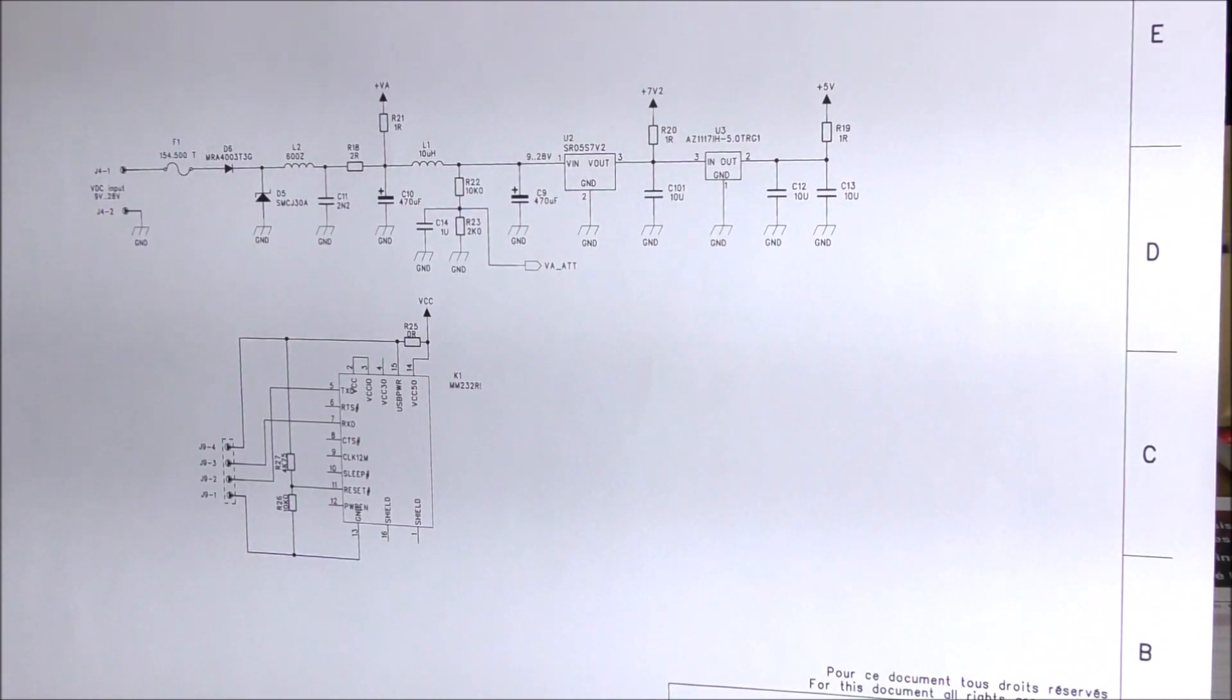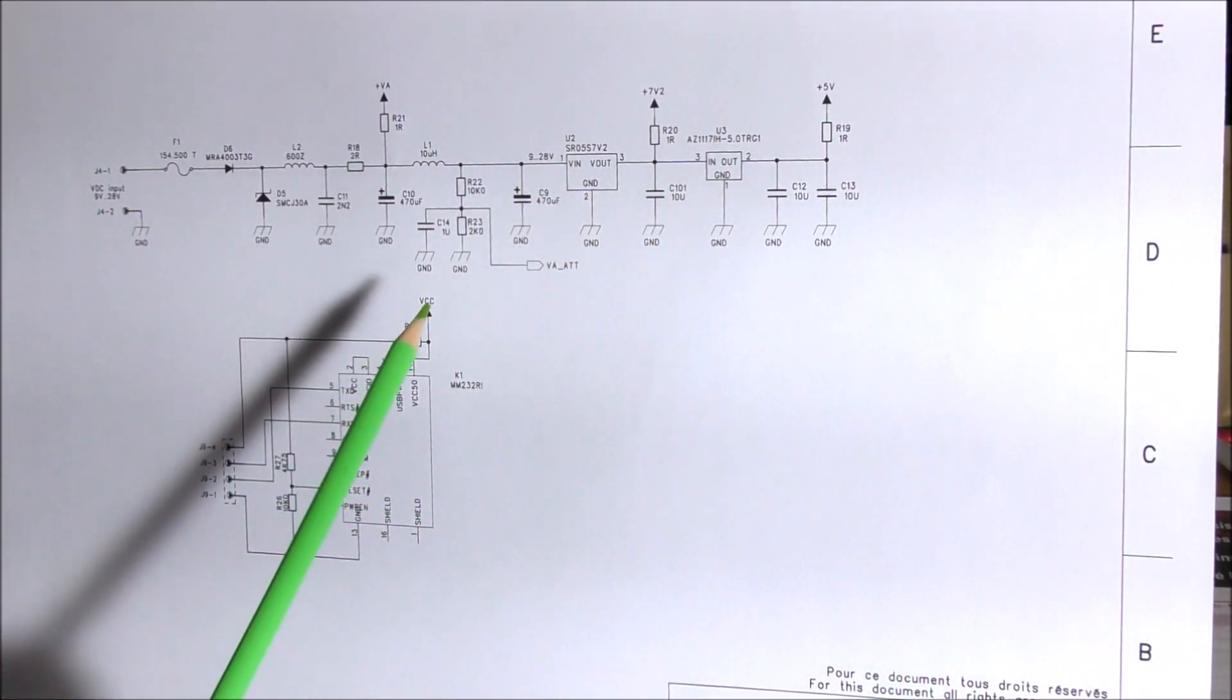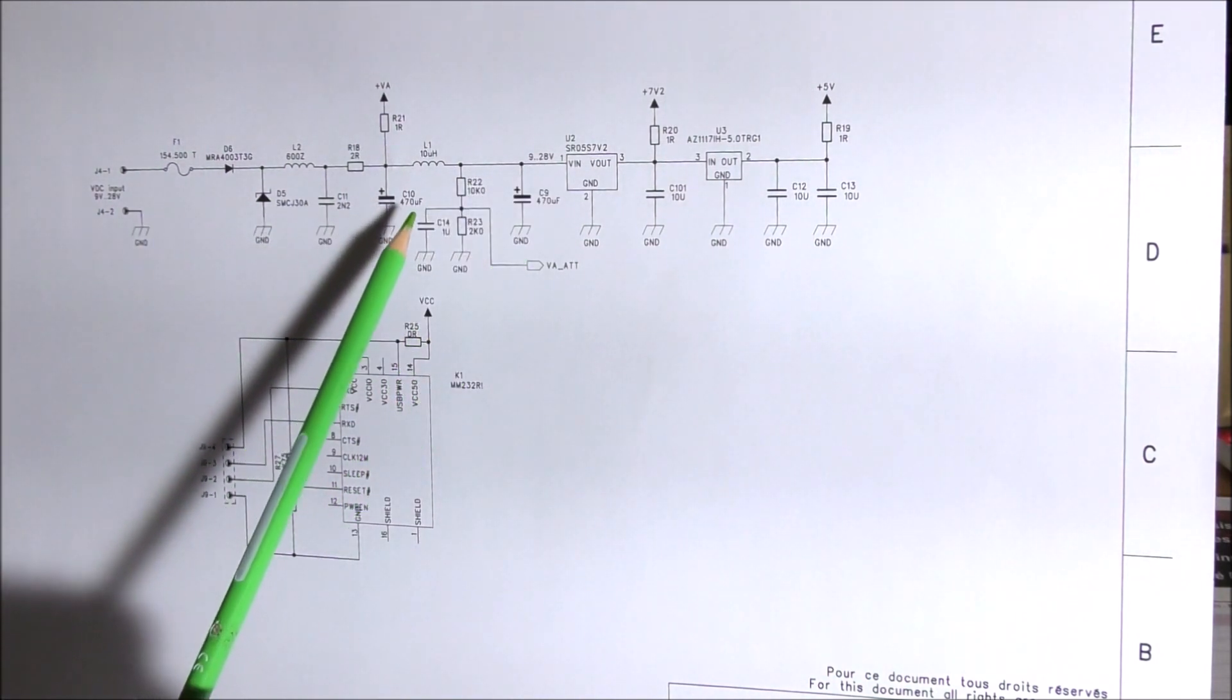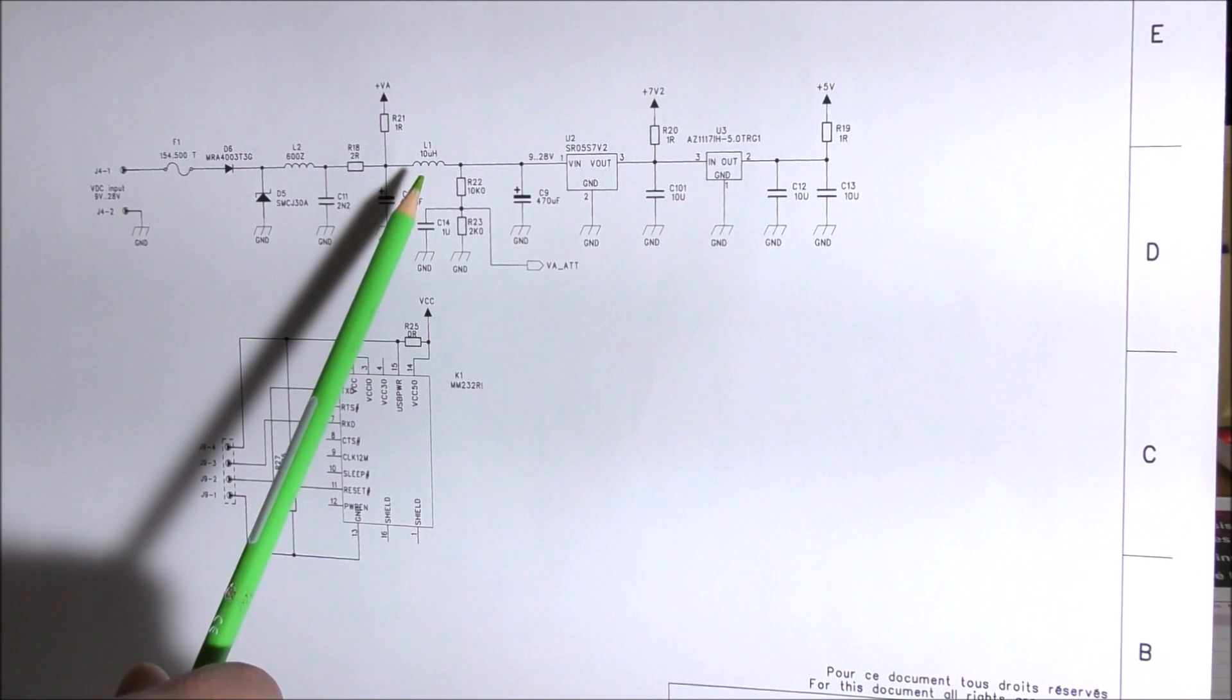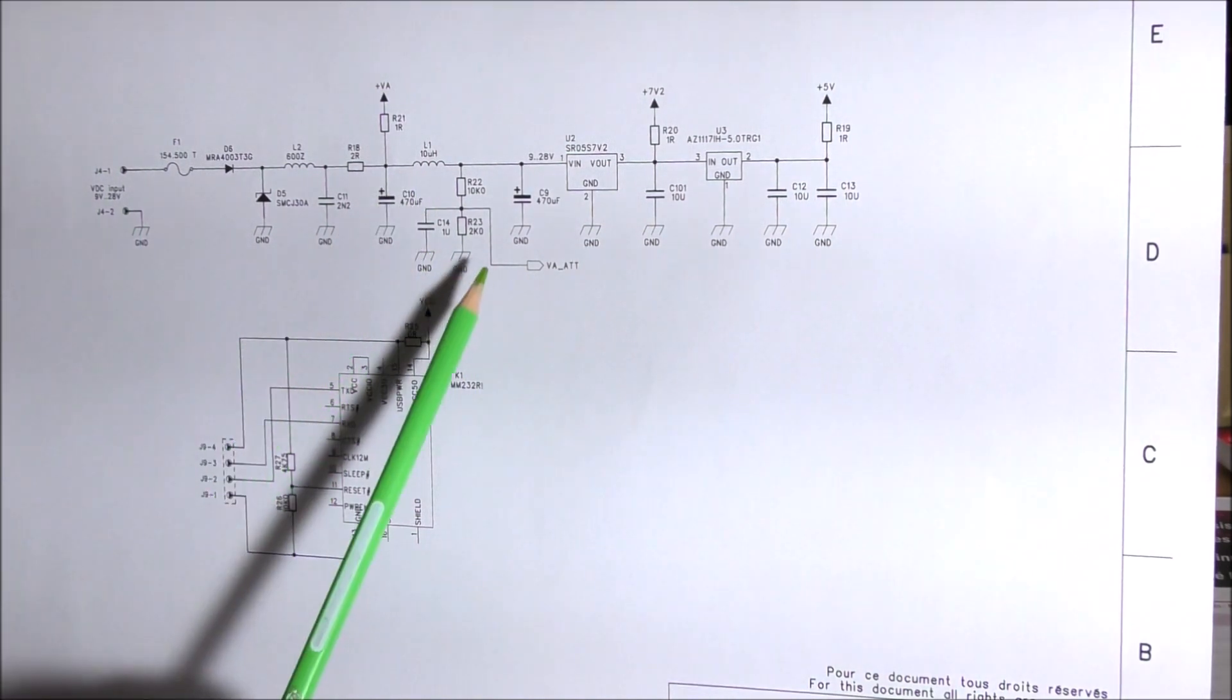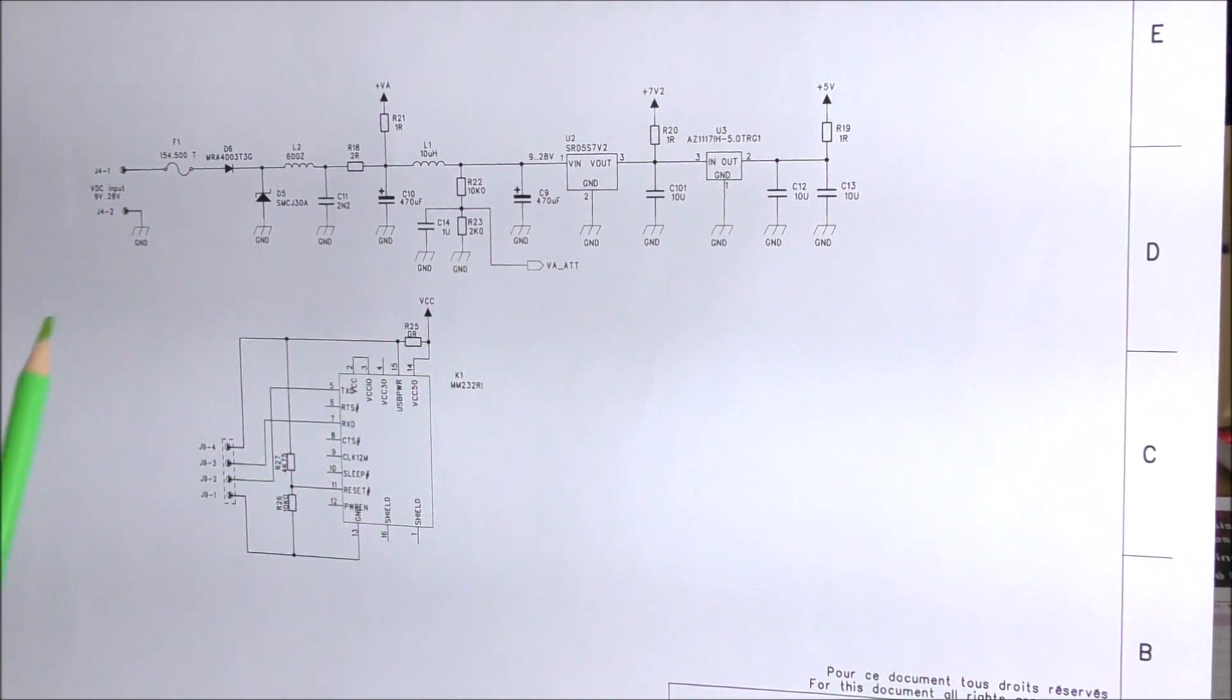We can see here, on this first page, the power supply. There is nothing special. The main power supply is the voltage of 7.2 volts here. This voltage is generated using a DC-DC converter. There is also a measurement of the power supply input voltage here, using this resistor divider. The signal is connected to one analog input of the microcontroller. There is also filtering here for EMC.